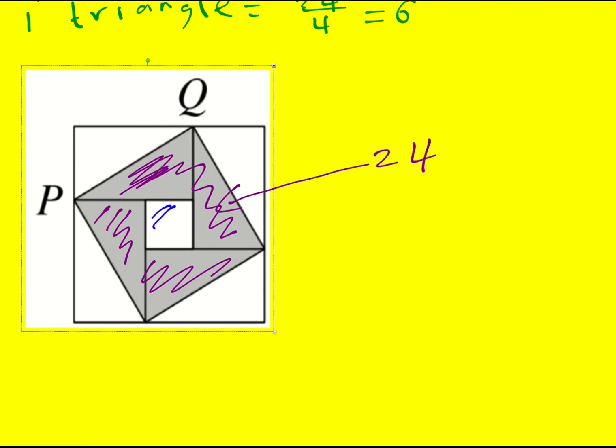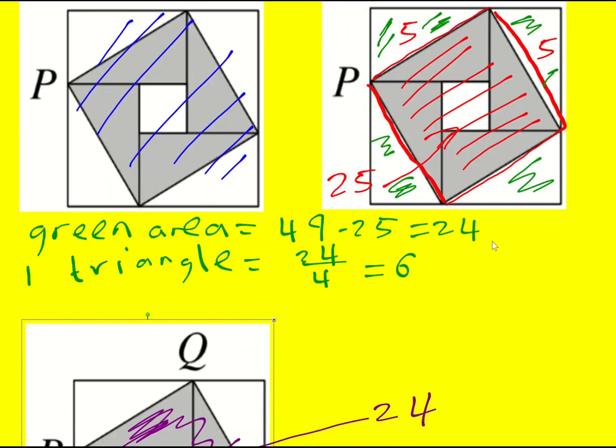So if I want the area of the small square, it's going to be 25, which was the whole square, minus 24, the triangles around it, and therefore the area must be 1.